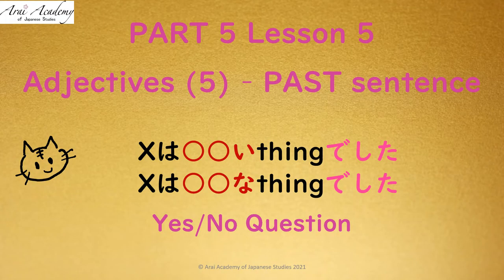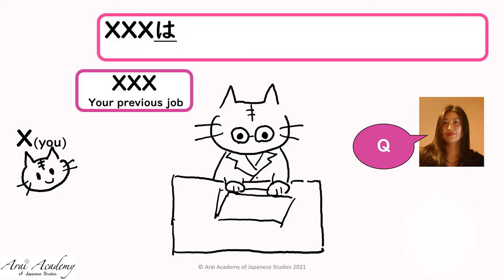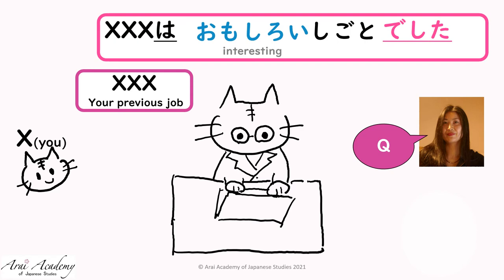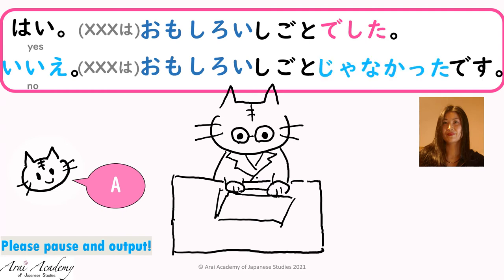Let's ask yes/no questions now. Let's say your previous job is X. I'll ask you: X wa omoshiroi shigoto deshita ka? For example: Hai, omoshiroi shigoto deshita. Or: Ie, omoshiroi shigoto ja nakatta desu. So, negative past is ja nakatta desu.